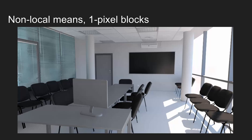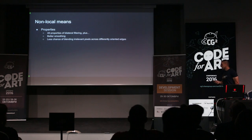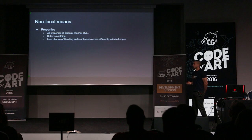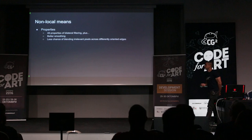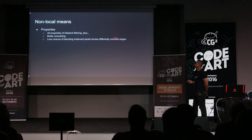I experimented with different block sizes. Using one-pixel blocks is just comparing pixel values. Nine-pixel (three-by-three) blocks give slightly sharper detail in some areas like the grids on the ceiling. The difference is subtle. The non-local means approach had all the good qualities of bilateral filtering but was also smoother and preserved detail a lot better — and that's more or less the final algorithm we used.